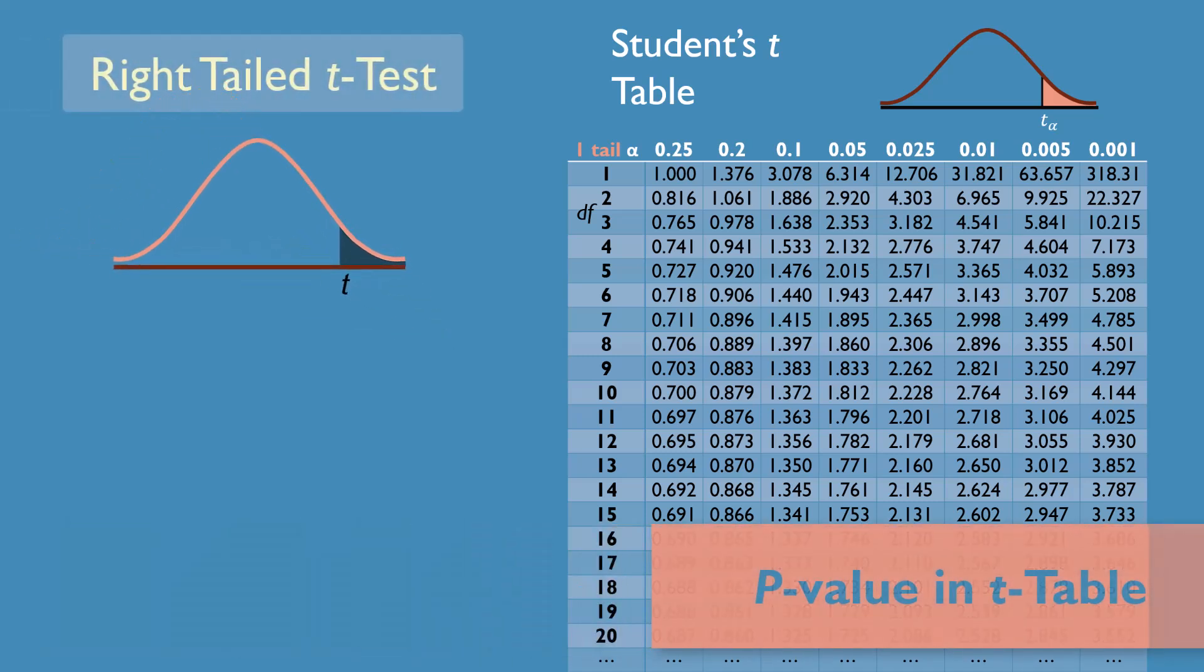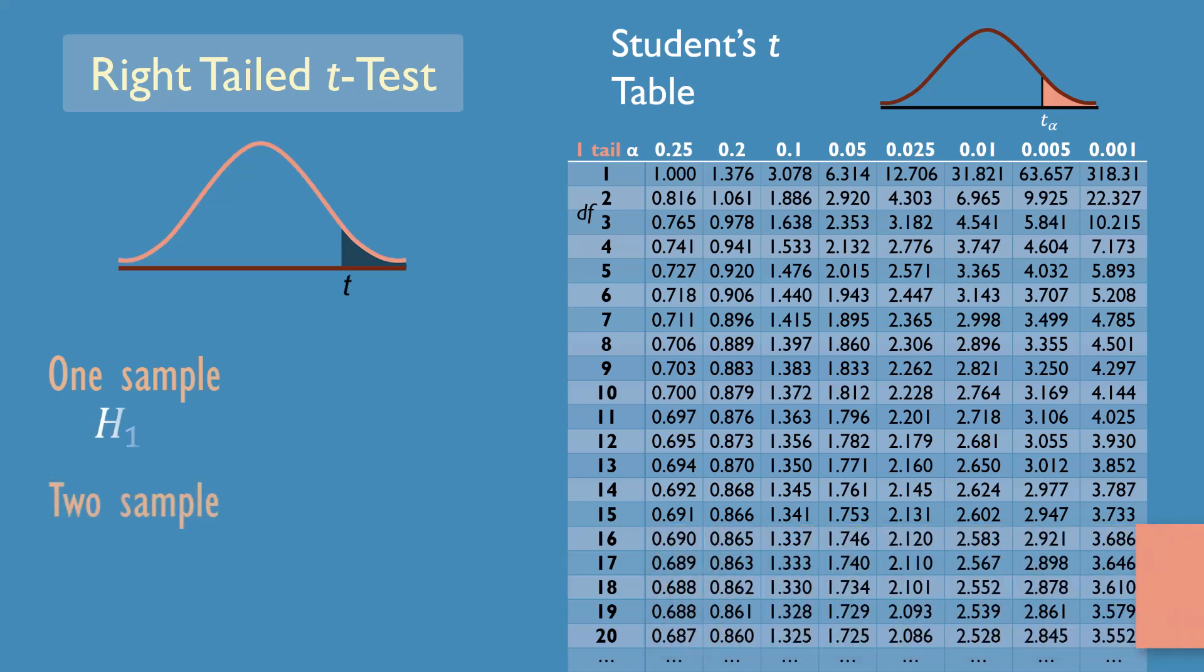If we're conducting a right-tailed t-test, either for one sample or two sample means, then our alternative hypothesis could be as follows.